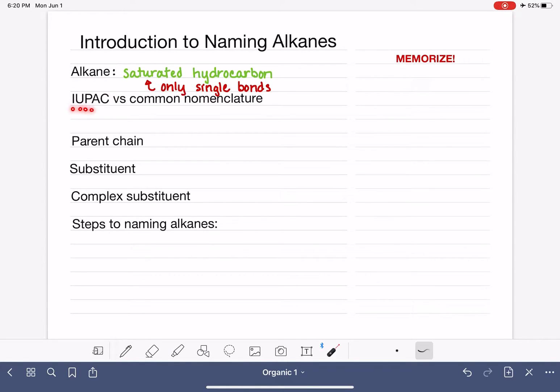The two different methods are called IUPAC, which is clearly an abbreviation, but we pronounce it like a word, IUPAC. And then the other method is called common nomenclature or common naming.